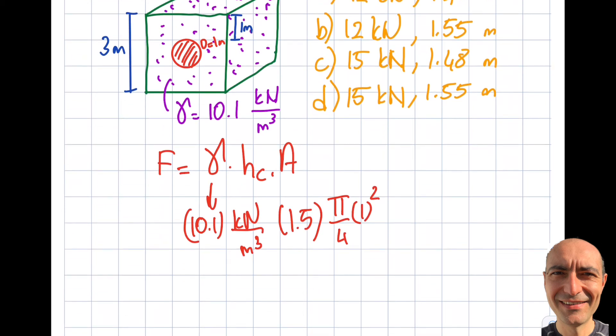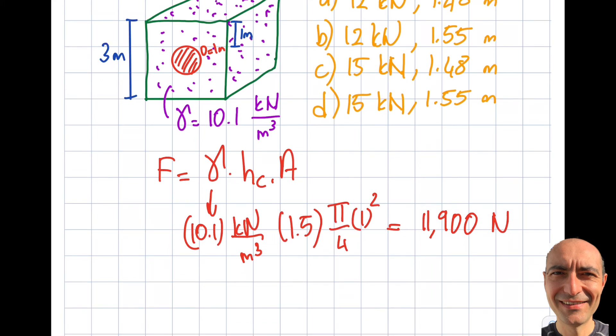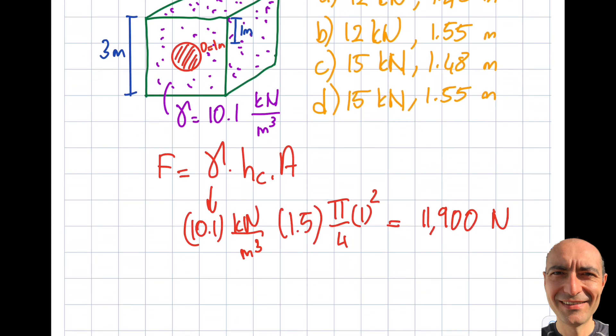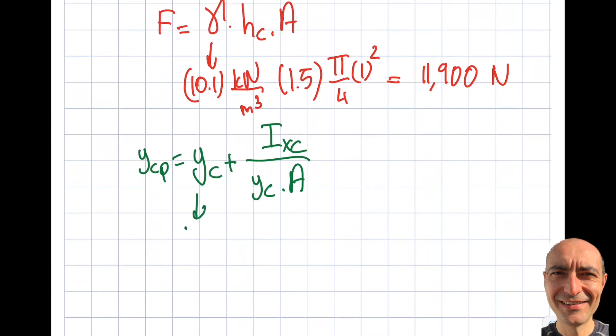If I punch this into my calculator, I will get myself newtons. So it's right around this 12 kilonewtons range. Then let's go ahead and find where is this acting. And it's the same formula as the last time. So I'm going to get myself YCP will be equal to YC plus IXC divided by YC times A. YC is 1.5, YC is 1.5, area is pi over 4 up there. What about IXC? I recommend you memorize this. It's not a big deal. Pi r to the power of 4 divided by 4, that's for circular.